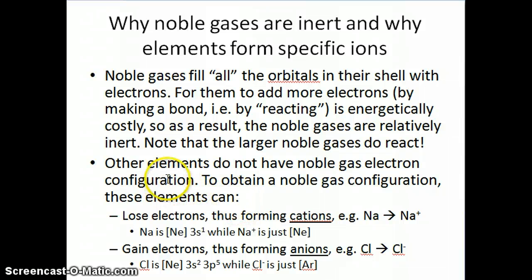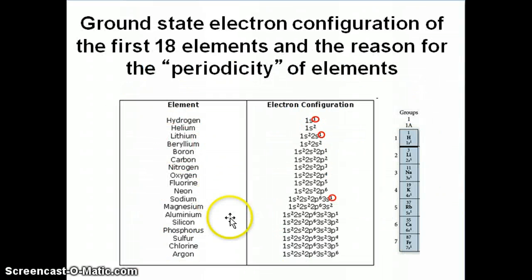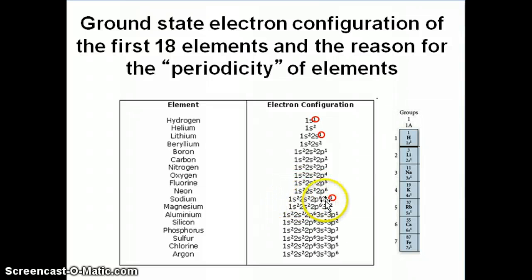Other elements that do not have noble gas electron configurations actually tend to react in a certain way. Noble gases are extremely stable — there's no reason for them to either get or lose electrons because they fill out all their orbitals in that shell. Other elements don't have that. For example, sodium is 1s2, 2s2, 2p6, 3s1. The 1s2, 2s2, 2p6 part is neon, but the 3s1 is not. So sodium is not as stable as neon. If sodium wants to stabilize itself, the easiest thing to do is lose that one electron and become something that looks like neon. When it loses that one electron, it becomes the cation Na+.